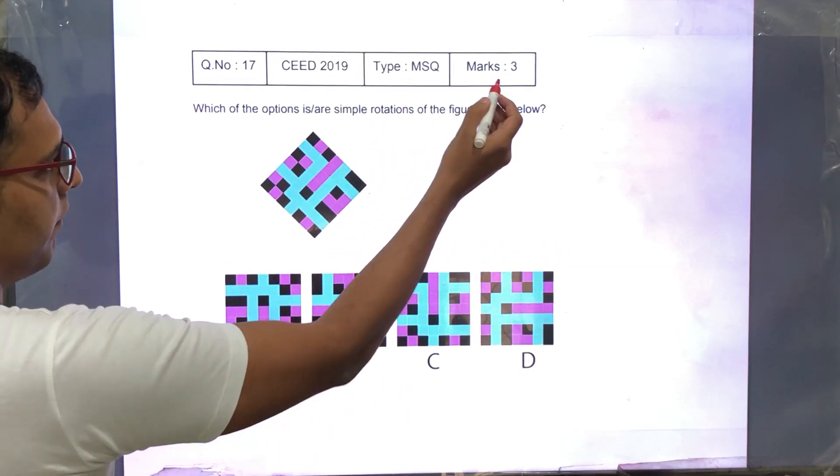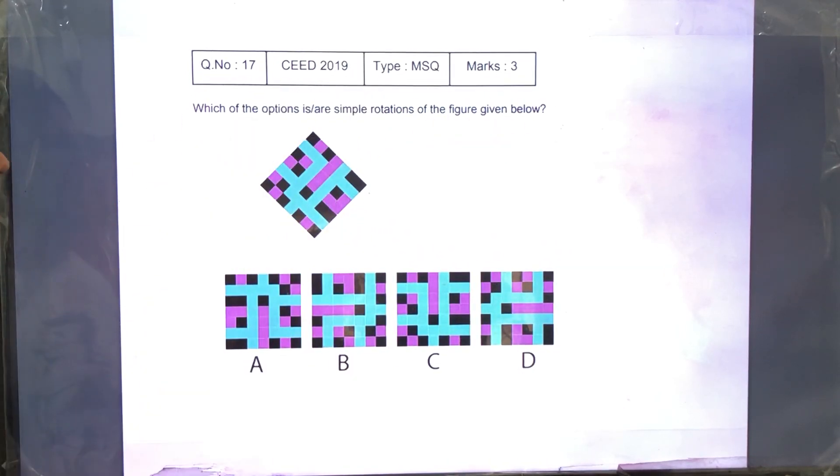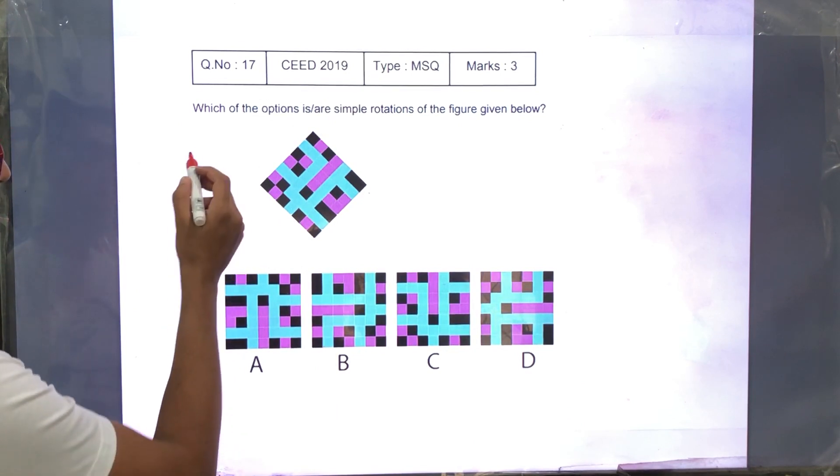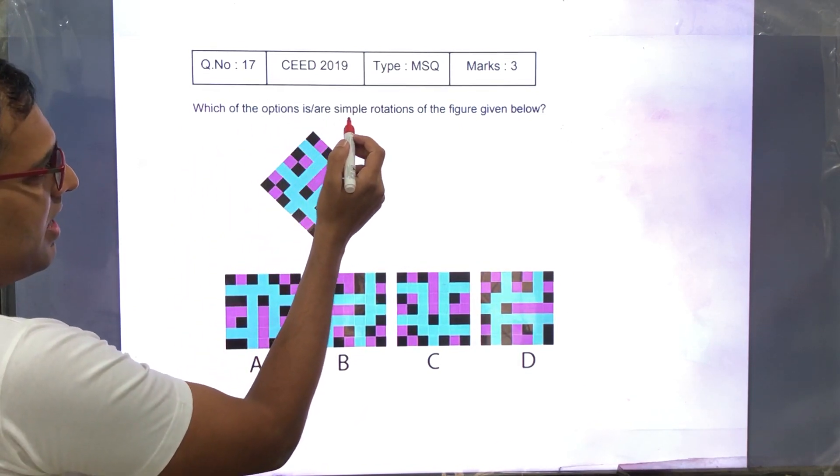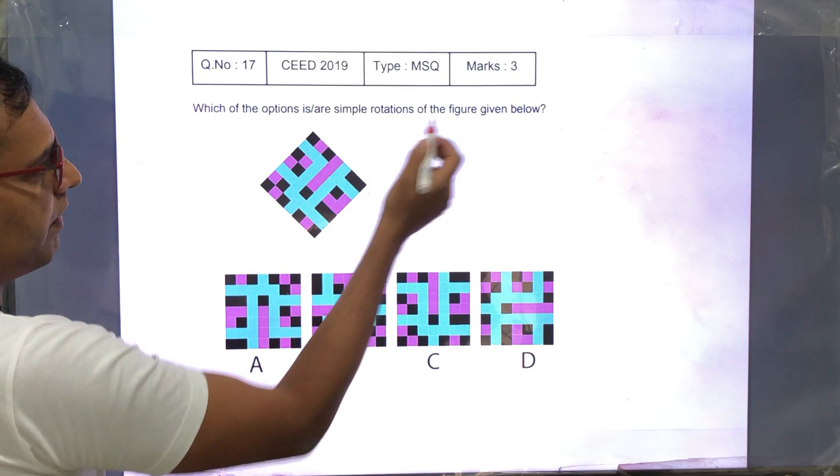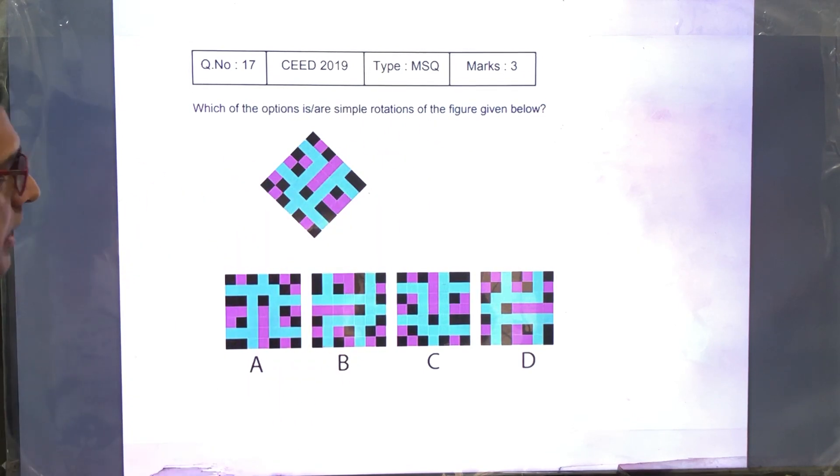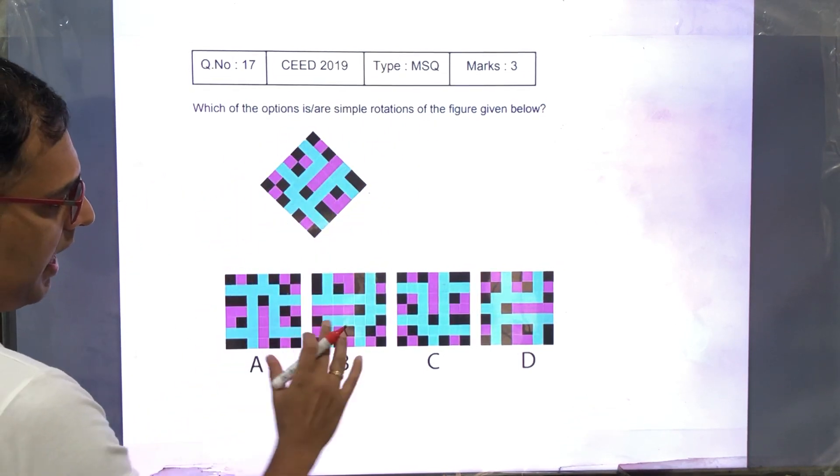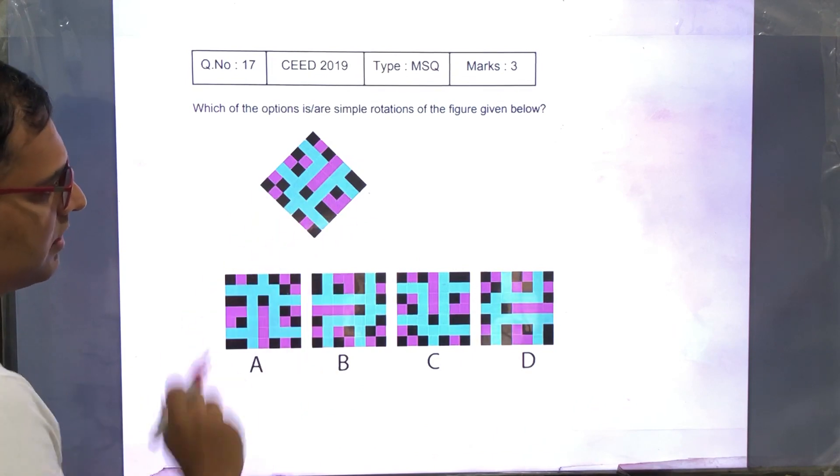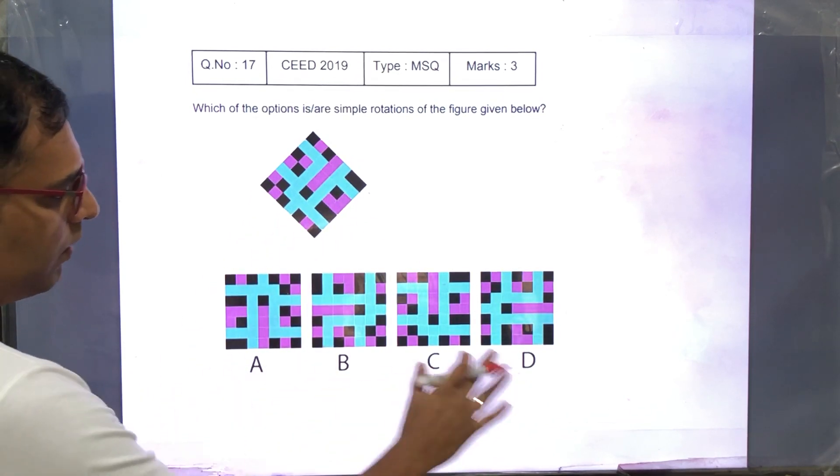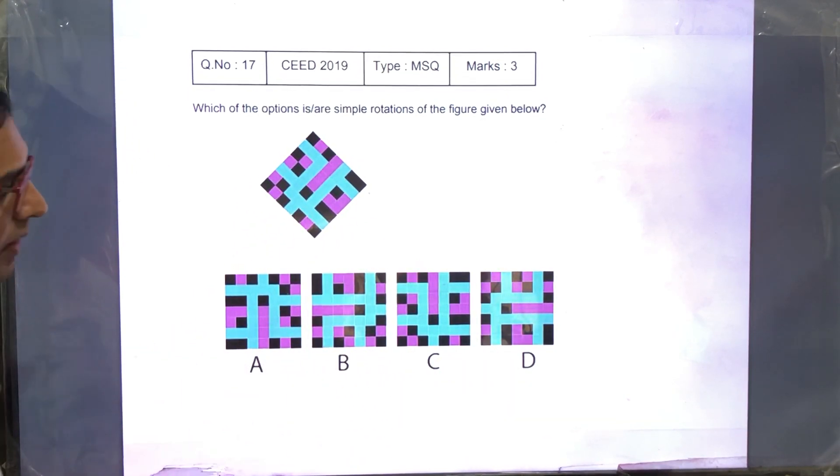This is an MSQ type question for 3 marks from SEED 2019. Which of the options are simple rotations of the figure given below? Alright, so we have a figure here and some of the options are simple rotations of the figure. You have to find out which ones are the correct rotations.